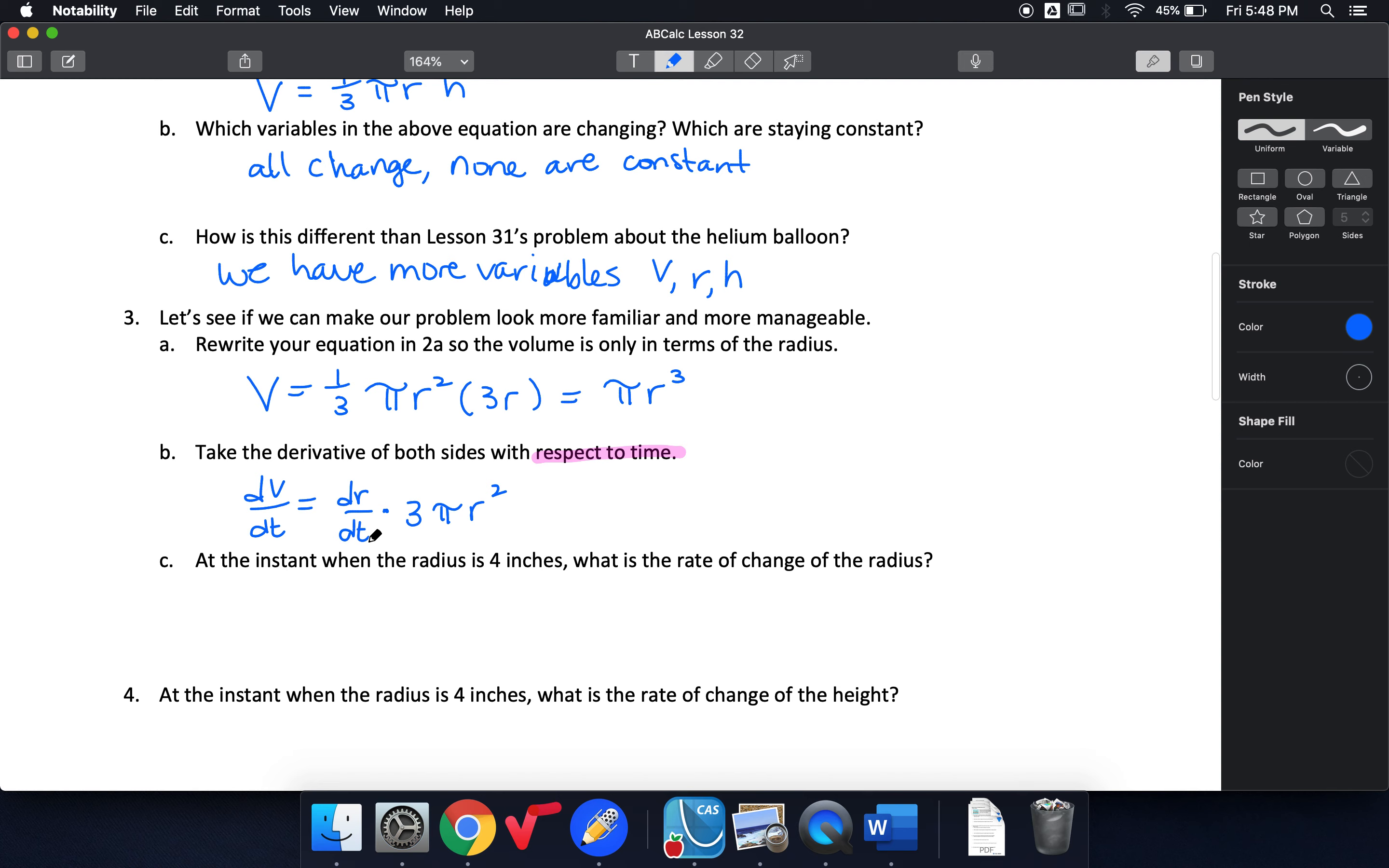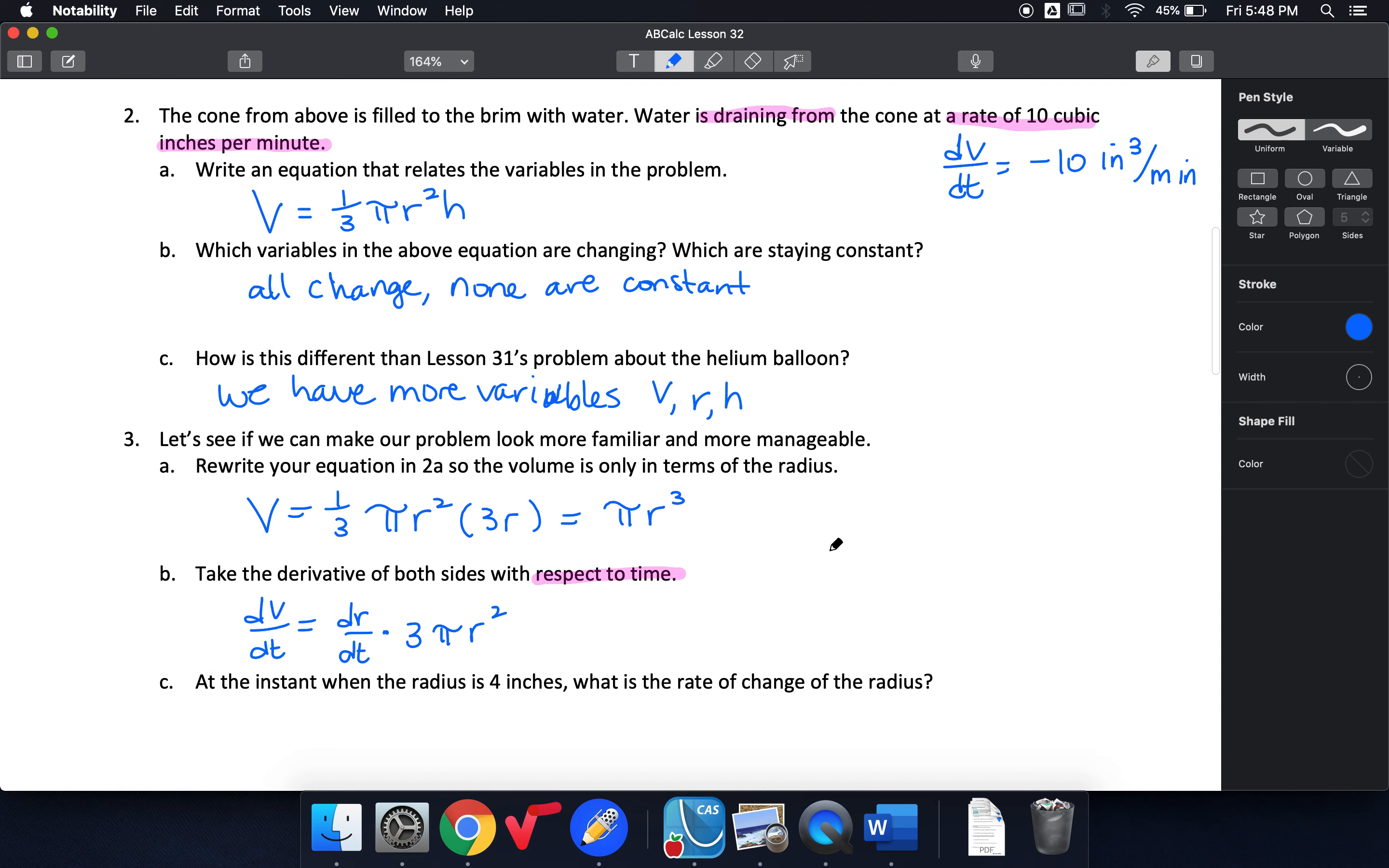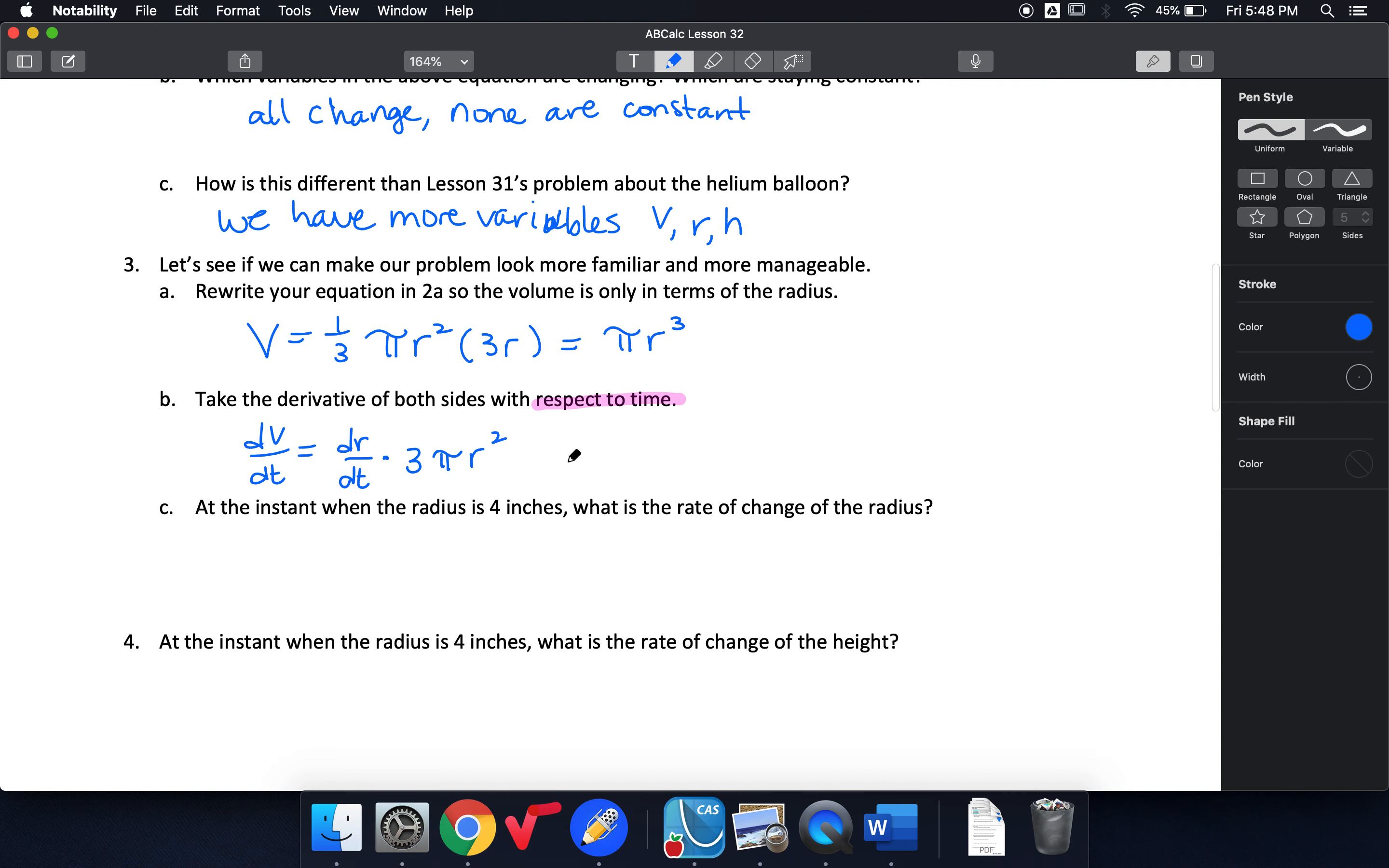So I can go back now because I know that my volume was changing at a constant rate. My volume is decreasing by 10 cubic inches per minute. So I'm going to go back and put that in as well. Negative 10 is 3 pi r squared dr/dt. I'll move that to the right hand side just to have it over to the side.